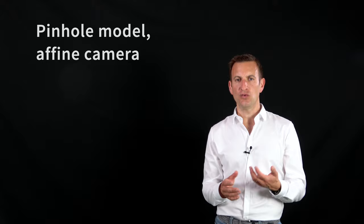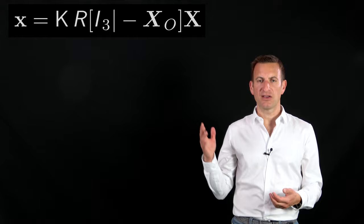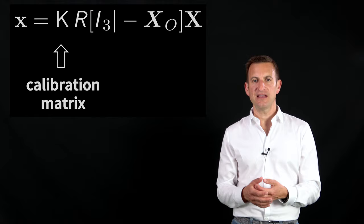We typically assume a pinhole camera and also assume a so-called model of an affine camera. That means a mapping that can be expressed in this form over here.